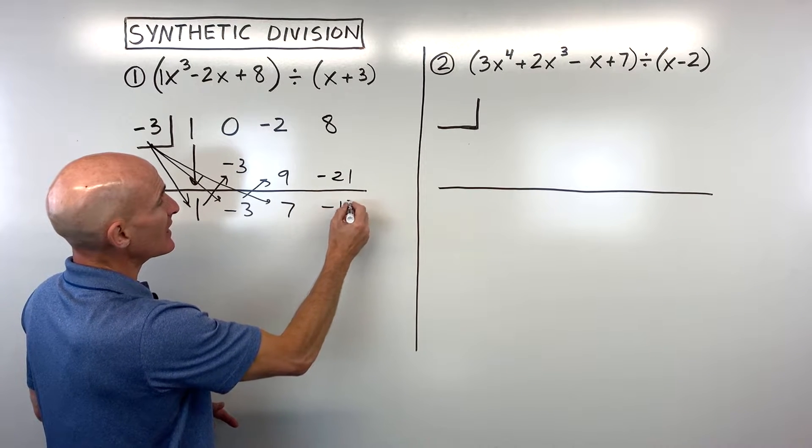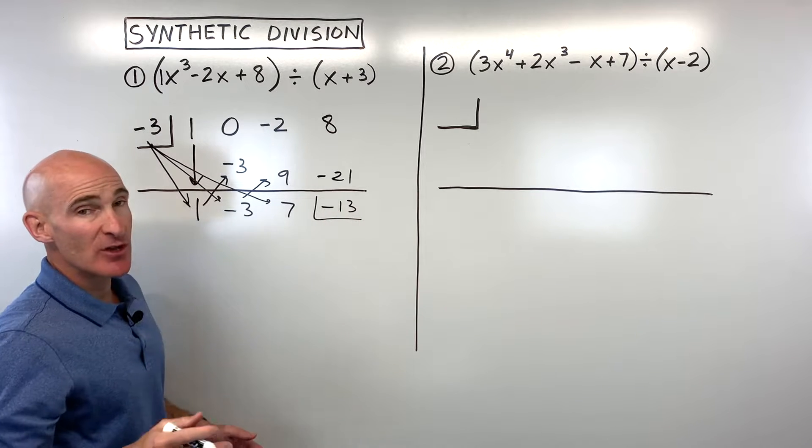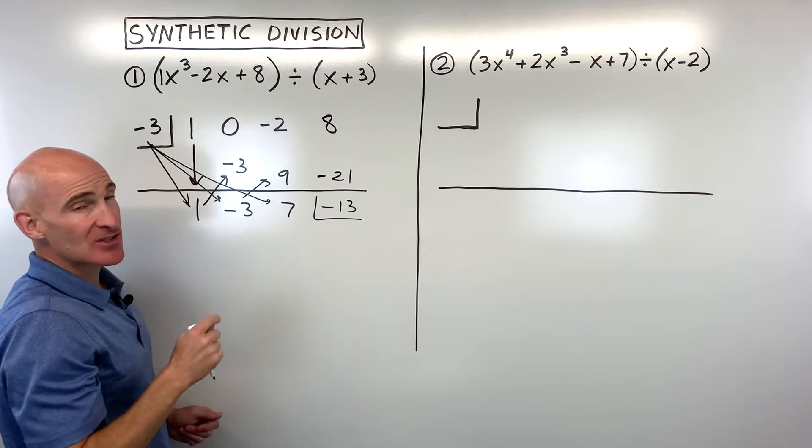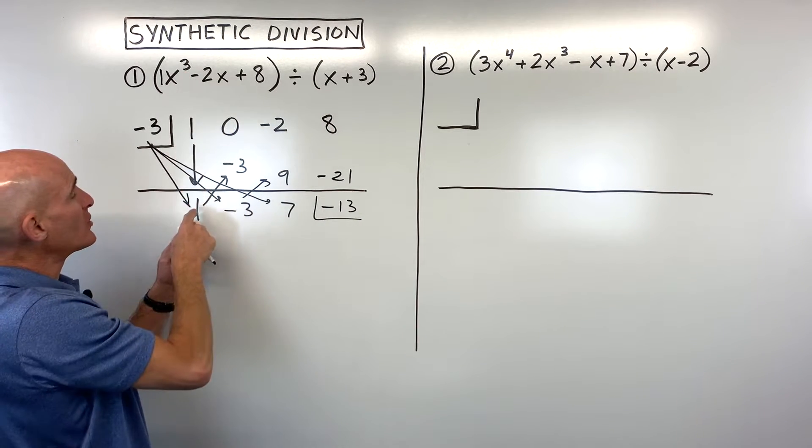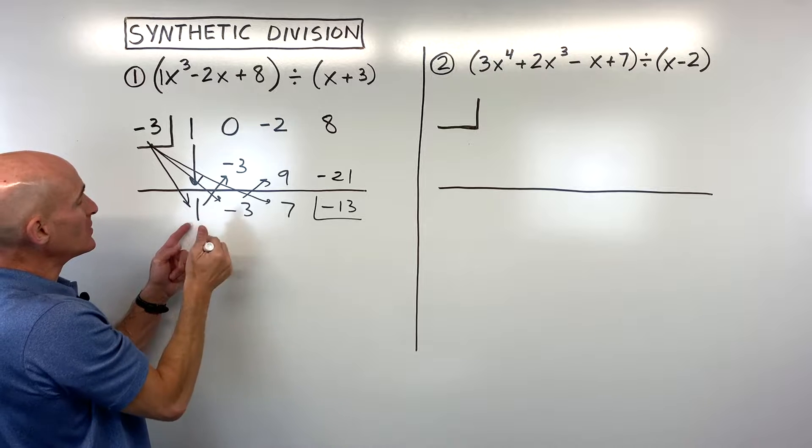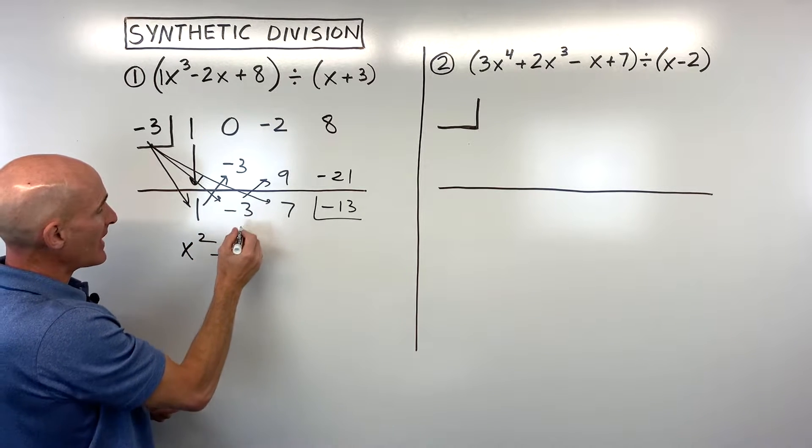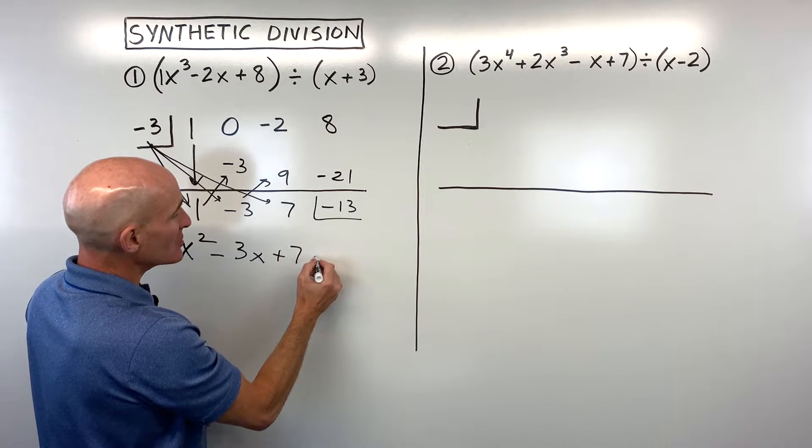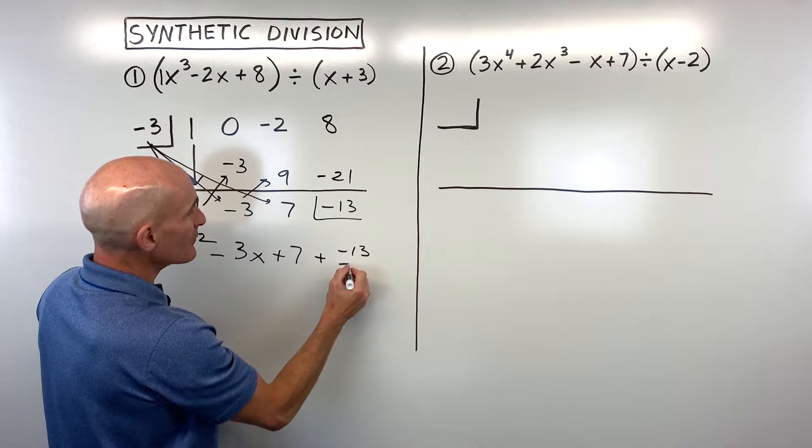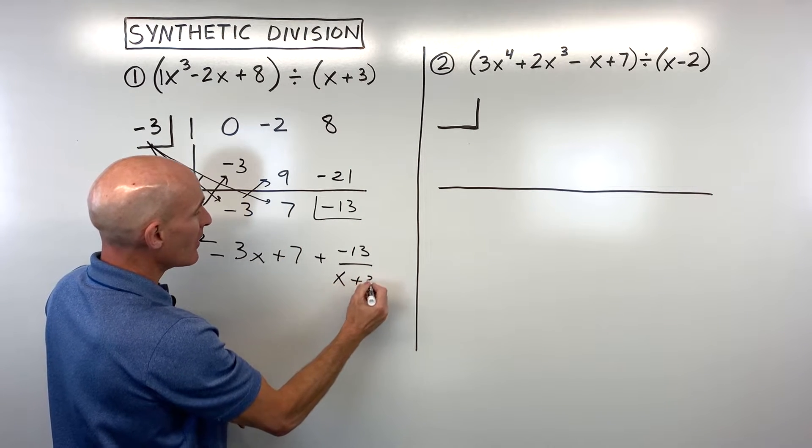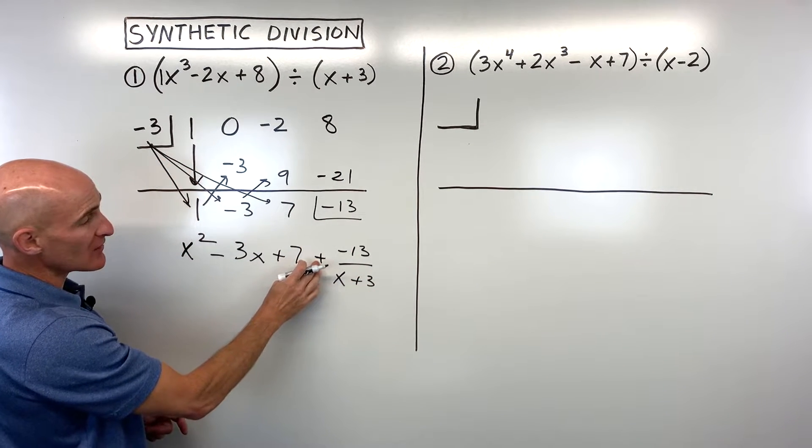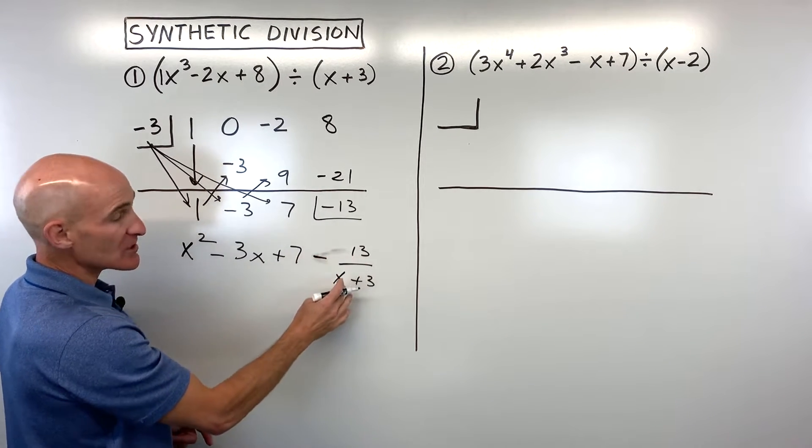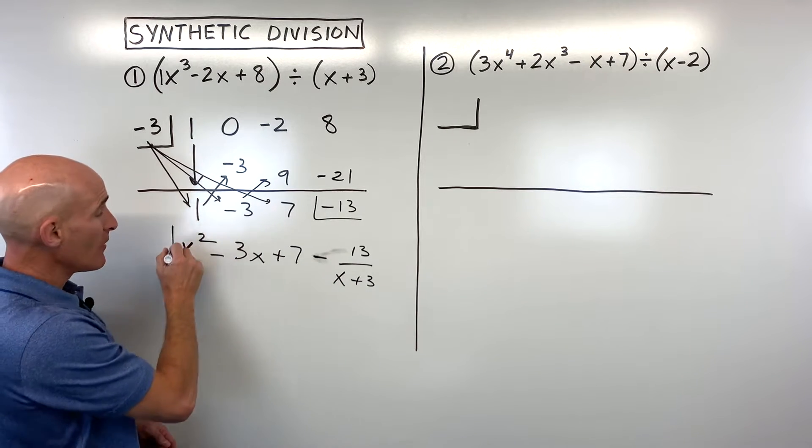That comes out to negative 13. And this last number here is going to be your remainder. Now, what you do when you're doing the synthetic division is because you're dividing by x to the first, this is going to go down by 1 degree. So you're going to go from x cubed to 1x squared minus 3x plus 7. And then what we do with the remainder is you can say plus a negative 13 over the divisor, x plus 3. Now, if you wanted to, instead of doing plus a negative 13, you could just write this as minus 13 over x plus 3. And this is your final result.